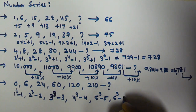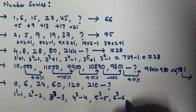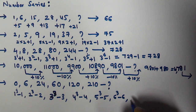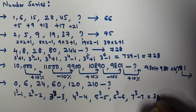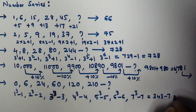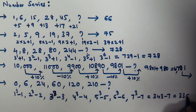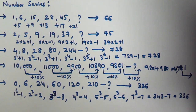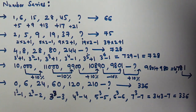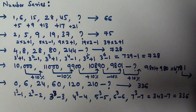The next term is 7³−7. Since 7³=343, minus 7 gives 336. So the next number in this series is 336. I hope you all got all of them.